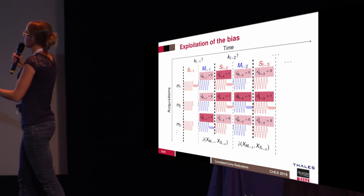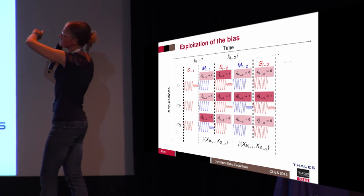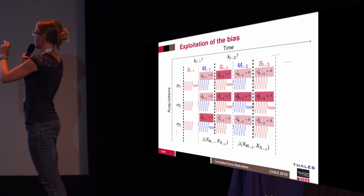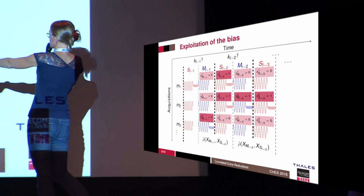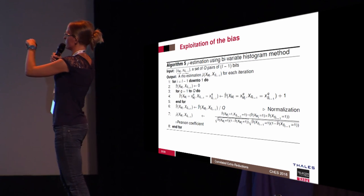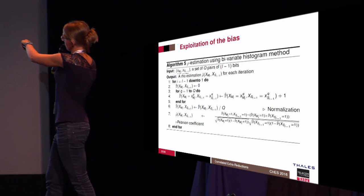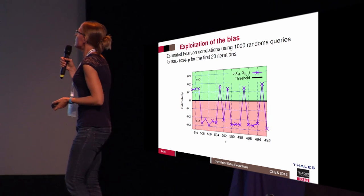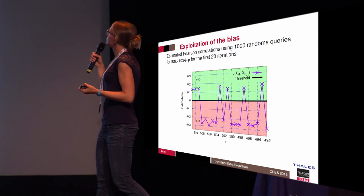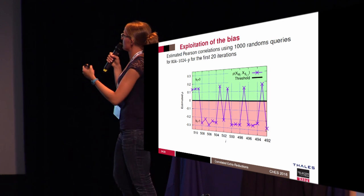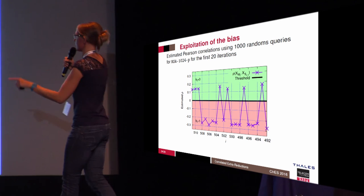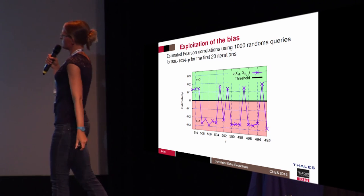To exploit the bits, we cut all operations and detect each extra reduction between consecutive multiply and square operations. We compute the estimated Pearson correlation for all operations and all acquisitions, compute the probability, and then compute the Pearson correlation coefficient. When we have a positive value, the key bit value equals zero; when we have a negative Pearson correlation value, the key bit value equals one.